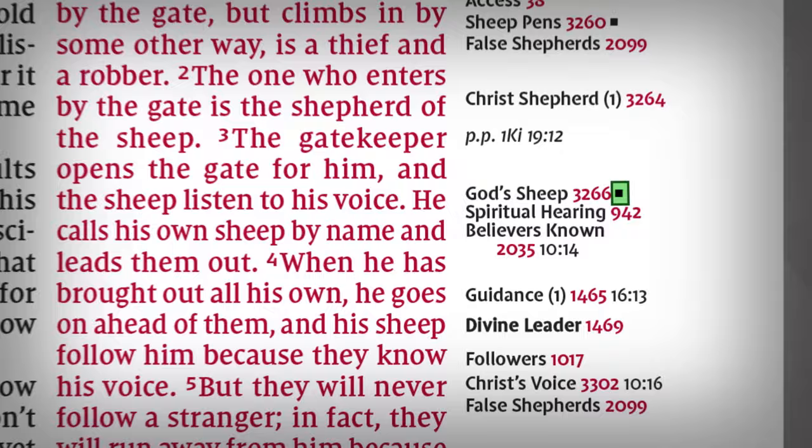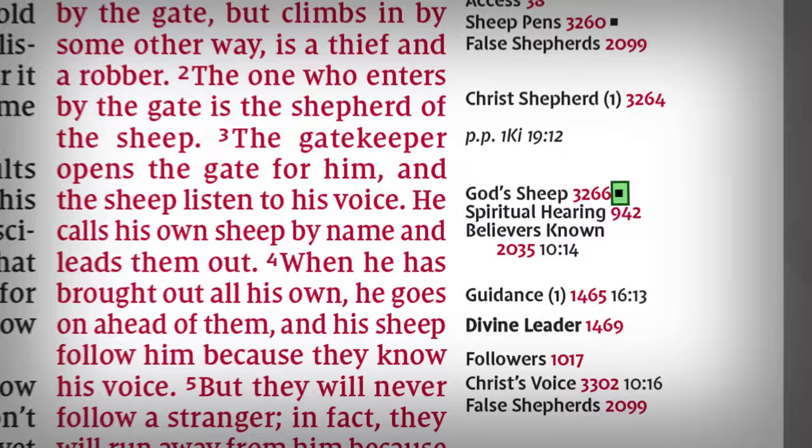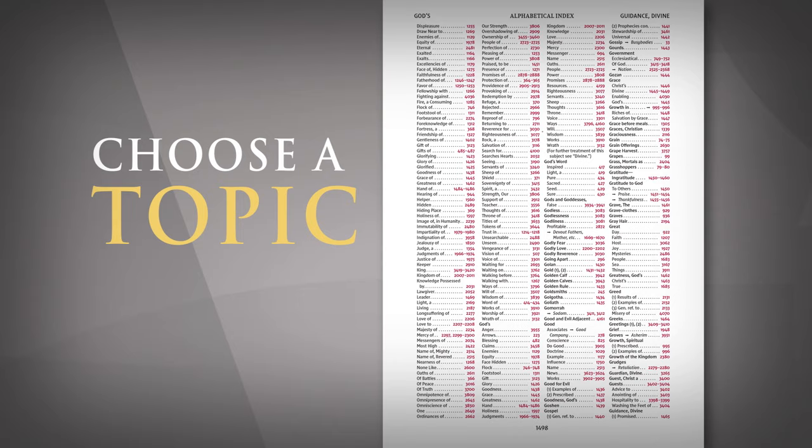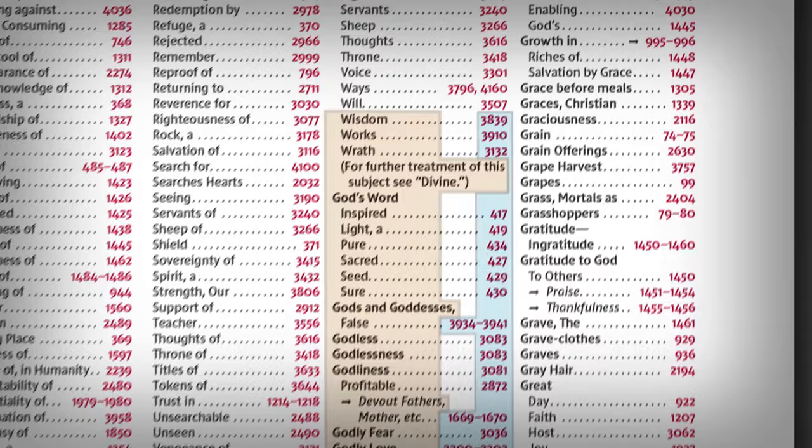Now you can start elsewhere and choose a new topic to continue your study. If you already know the topic that you'd like to study, you can easily discover where to start that process. There may be numerous verses on your topic, and you can use the alphabetical index in the back of the Bible to find the corresponding topic number and a starting point.